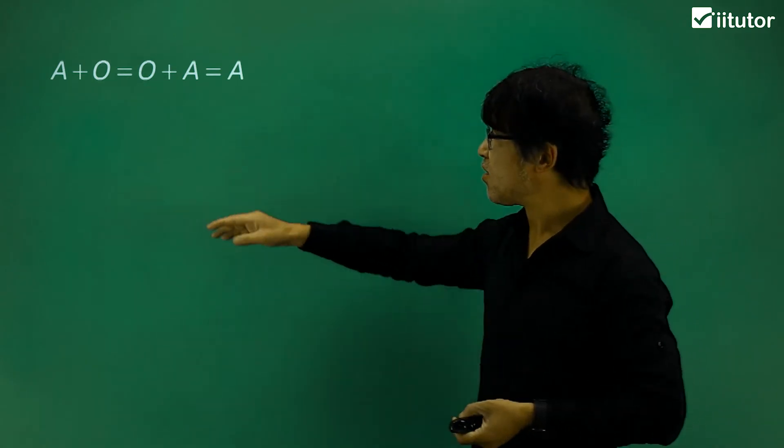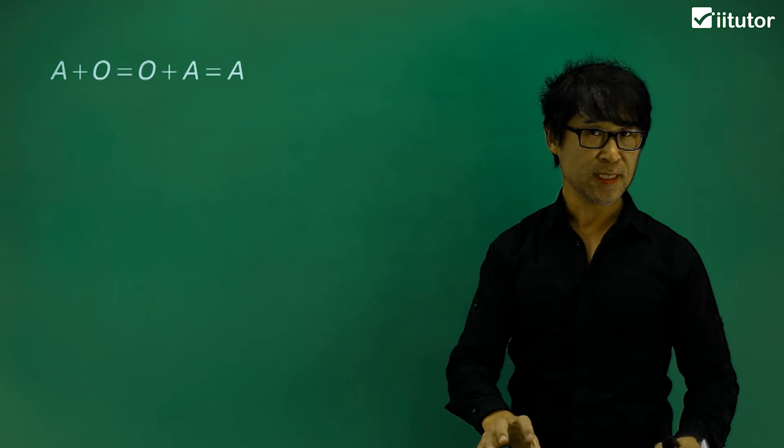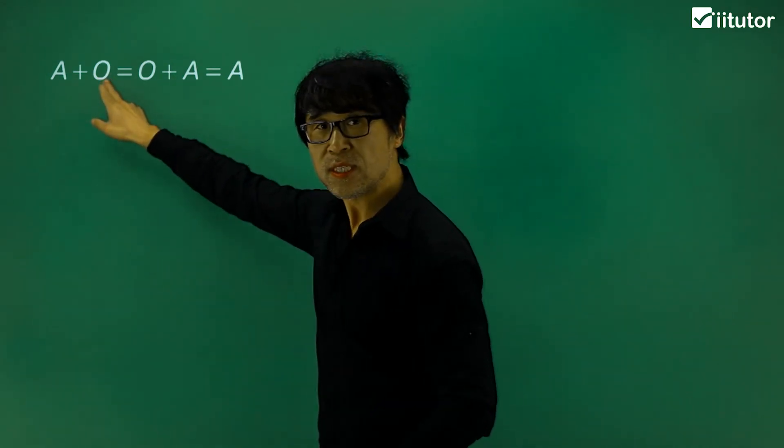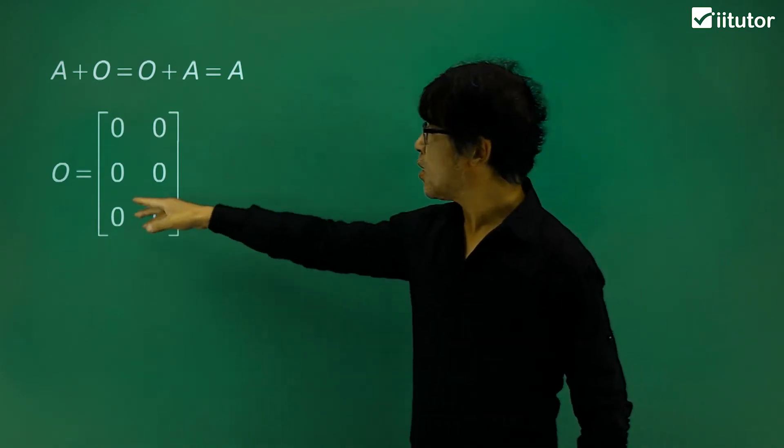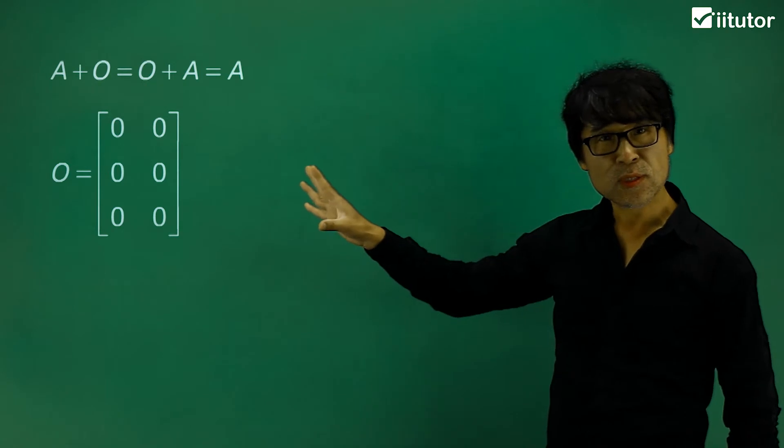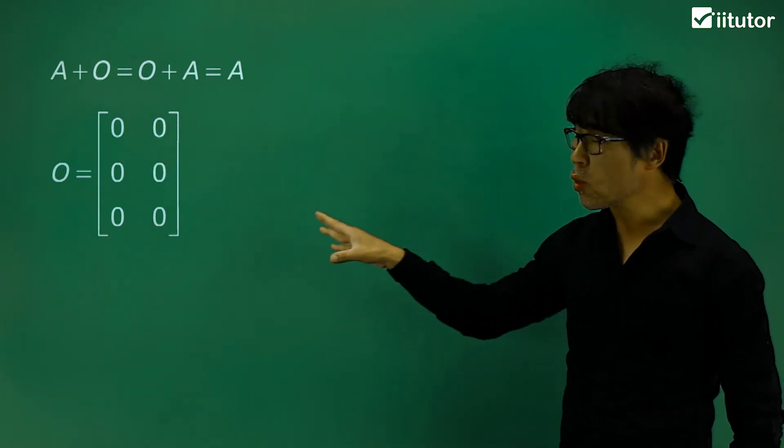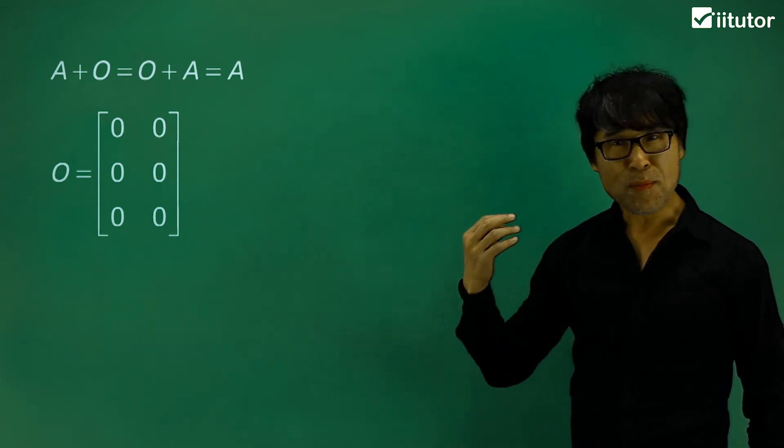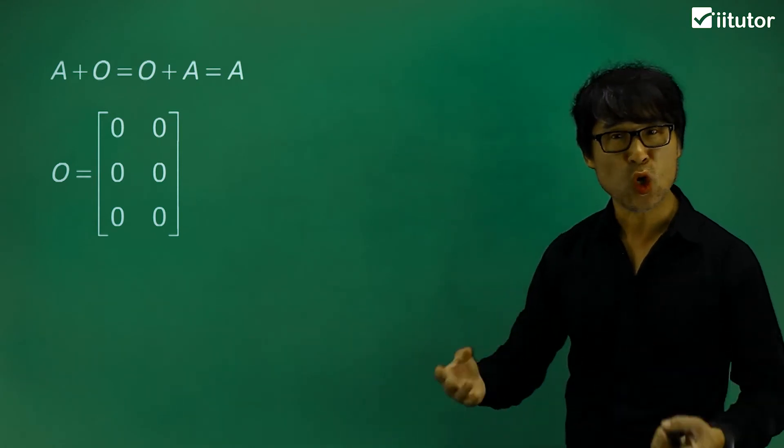So in matrix, if A and O are matrices, then this zero is called like this one. That could be one of the examples. It could be two by three zeros or three by ten zeros. So that is called zero matrix, or null matrix. Just a terminology of how we call them out.